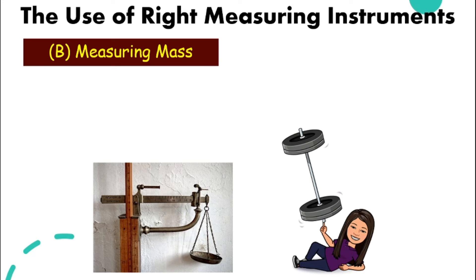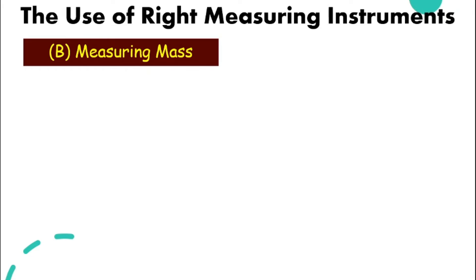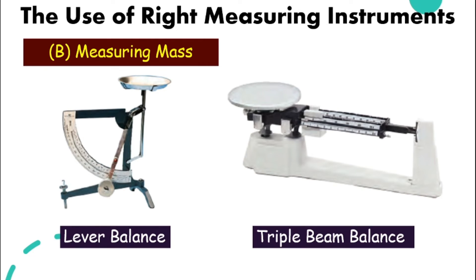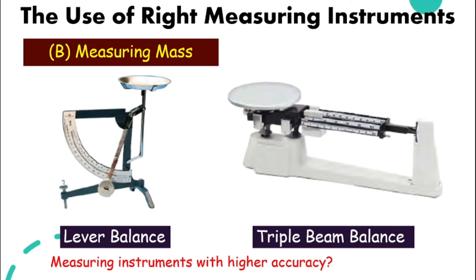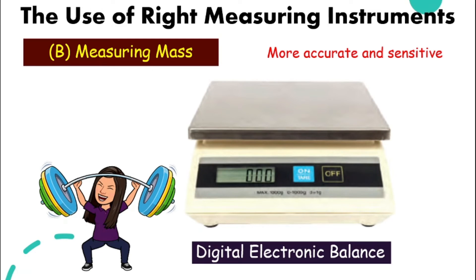How about mass? Mass is the quantity of matter in an object, and the SI unit is kilogram. We can measure mass using a level balance or a triple beam balance. If we need higher accuracy or higher sensitivity, we can use a digital electronic balance, which is very common — especially in sundry shops or grocery stores.